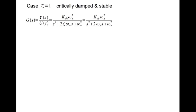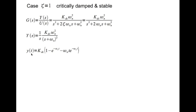The second case is ζ = 1, the critically damped case — again stable. Setting ζ = 1 in the transfer function, the denominator factorizes as (s + ω_n)². Doing partial fraction expansion and inverting gives y(t) = 1 − e^(−ω_n·t) − ω_n·t·e^(−ω_n·t). Notice that both poles are at the same location: minus ω_n.